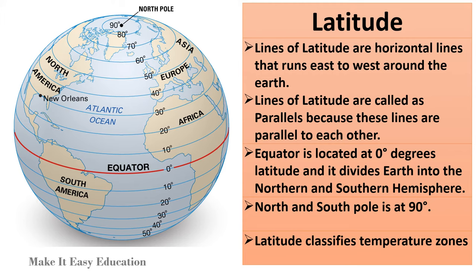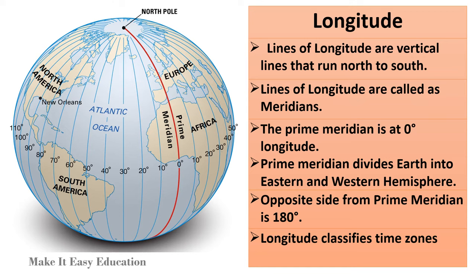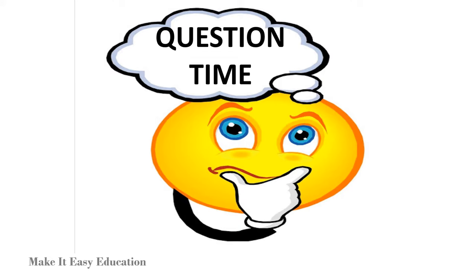Longitude. Lines of longitude are vertical lines that run north to south. Lines of longitude are called meridians. The prime meridian is at 0 degrees longitude. The prime meridian divides earth into the eastern and western hemisphere. The opposite side from the prime meridian is 180 degrees. Longitude classifies time zones.